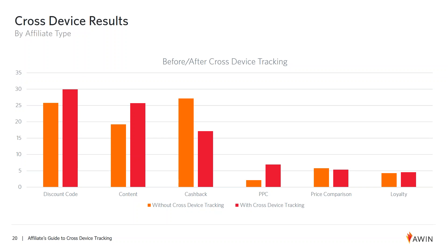The big winner here is content publishers such as bloggers, who increased from 19% to 26% — a gain of over 33% thanks to cross-device tracking. This growth shows the value of content publishers to advertisers when it comes to making sales happen. Content sites tend to play an early role in the sales funnel, so this methodology ensured they were properly compensated. Justifiably, many advertisers wondered if discount code or cash back sites added incremental sales or merely came in at the end to claim a commission. Thanks to cross-device tracking, we showed consistently that while content sites moved up, both cash back sites and discount code sites still remained in the top three sources of traffic and sales.